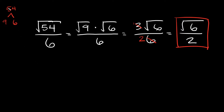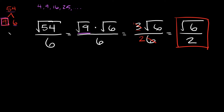Now one thing I want to point out: when we were breaking 54 down, I specifically broke it down into 9 and 6 because 9 is a perfect square. Perfect squares are numbers like 4, 9, 16, 25, 36, 49, and so on. If you can ever use a perfect square as one of your factors, you always want to do that, because it simplifies your math — the square root of a perfect square like 9 just becomes 3, so you don't have to deal with any more radical symbols.